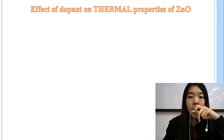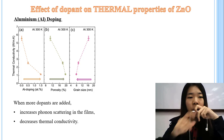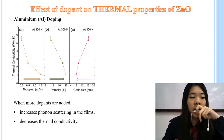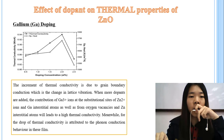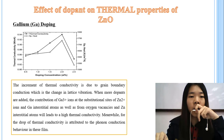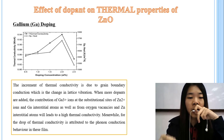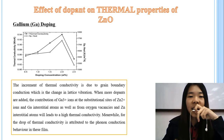For the thermal properties of ZnO due to doping: with aluminum doping, increasing dopant content increases phonon scattering and thus decreases thermal conductivity. For gallium doping, thermal conductivity first increases to a maximum point because Ga³⁺ ions substitute at the Zn²⁺ site, enhancing thermal conductivity. The subsequent drop in thermal conductivity is contributed by phonon scattering behavior in the film. That's all from me, thank you.